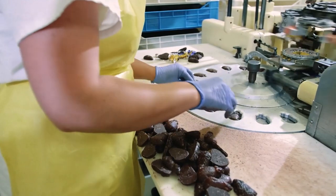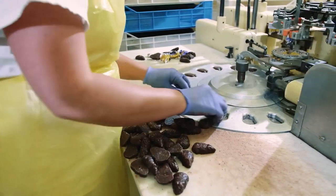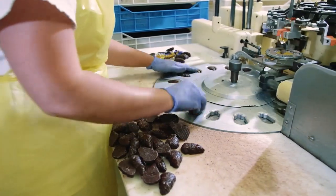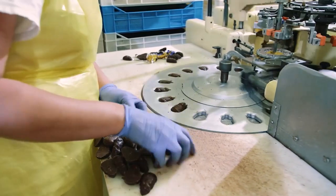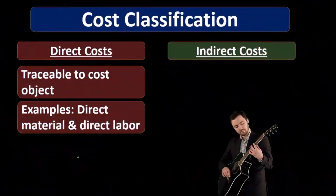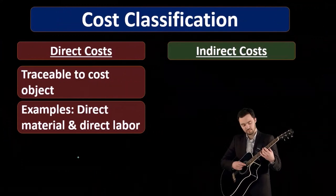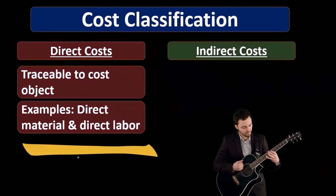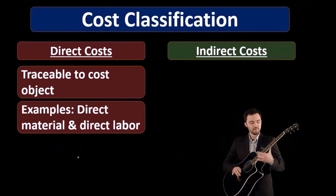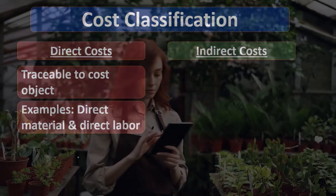For direct materials, if we're making guitars, for example, we can trace the wood in the guitar to a particular guitar that we are producing and allocate the cost of that wood to that piece of inventory, to that guitar. If we're talking about direct labor, same thing — if someone's putting together a guitar, we can allocate the cost of the labor to a particular piece of inventory, a particular guitar.